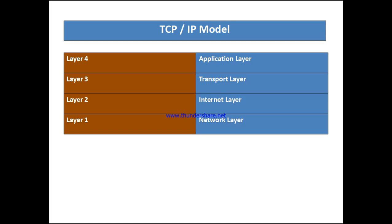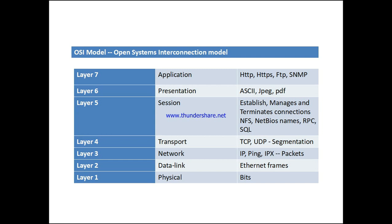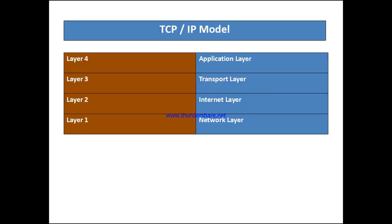In the OSI model there are 7 layers, but in the TCP/IP model there are 4 layers. The process is the same as the OSI model, but the TCP/IP model is a shorter layer format — the 7 OSI layers are split and condensed into 4 layers.